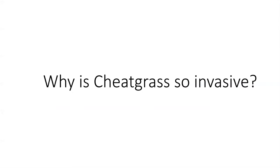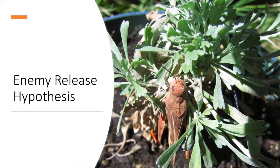An important question is: why is cheatgrass so invasive? What makes it so successful that it can establish monocultures in the sagebrush ecosystem? There are a variety of different hypotheses. For instance, the enemy release hypothesis argues that cheatgrass in its non-native range — the United States — does not have many natural enemies. Grasshoppers, shown here feeding on sagebrush, much prefer sagebrush and native grasses over cheatgrass. So grasshoppers limit the growth of native plants but do not touch the cheatgrass, allowing it to thrive and take over habitats.